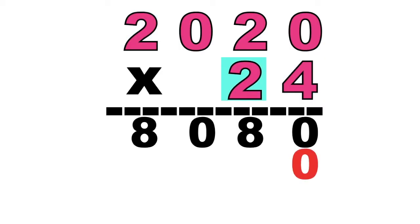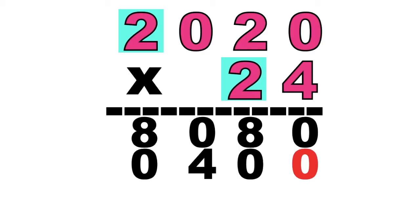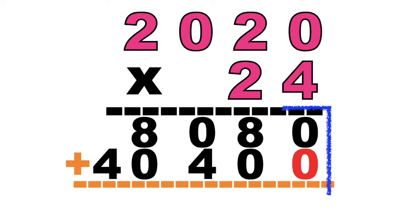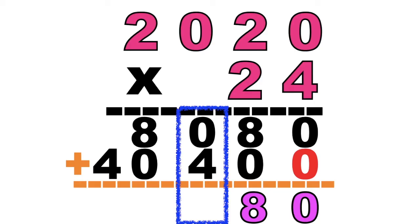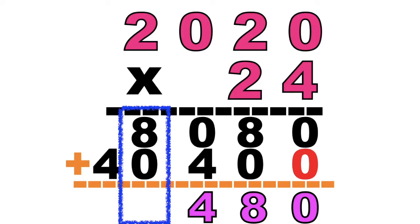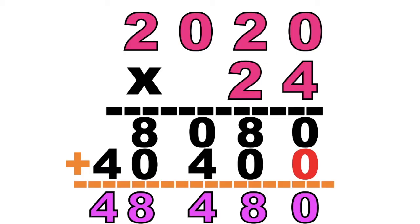Don't forget to write your imaginary 0. So let's have 2 times 0 equals 0. 2 times 2 equals? 2 times 0 equals 0. 2 times 2 equals? Good job, children! It's 4. So we can now add the partial products. 0 plus 0 equals 0. 8 plus 0 equals 8. 0 plus 4 equals 4. 8 plus 0 equals 8. Then bring down 4. So the product of 2,020 and 24 is 48,480.